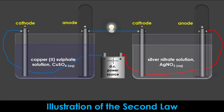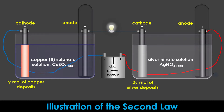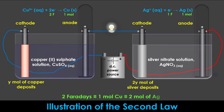We can illustrate Faraday's Second Law by using two electrolytic cells connected in series, with one containing copper(II) sulfate solution and the other containing silver nitrate solution, as shown on the screen. When the circuit is closed and the same amount of current I is made to flow through both cells after a specified time t, it will be observed that the number of moles of silver deposited at the cathode of the silver nitrate cell will be twice that of copper deposited at the copper(II) sulfate cell, which is inversely proportional to their charges. For instance, to deposit one mole of copper, two Faradays are required because copper is a divalent cation, while to deposit one mole of silver, one Faraday is required because silver is a monovalent cation. So if two Faradays of electricity are passed through the two cells, one mole of copper will be deposited in the copper(II) sulfate voltameter while two moles of silver will be deposited in the silver nitrate voltameter.